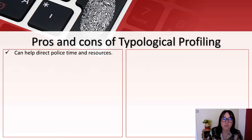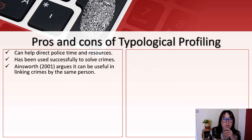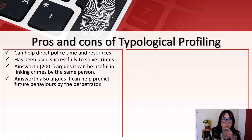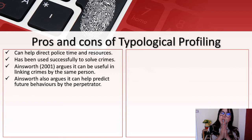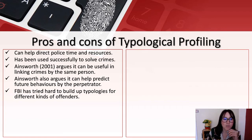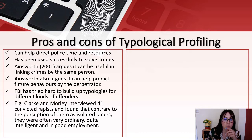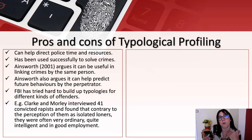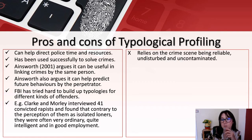The pros of typological profiling: it can help direct police time and resources, has been used successfully to solve crimes, and Ainsworth (2001) argues it can be useful in linking crimes to the same person and predicting future behaviours by the perpetrator. The FBI has tried to build up typologies for different offenders. Clark and Morley interviewed 41 convicted rapists and found, contrary to perception, they were often ordinary, quite intelligent, and good in employment. However, it does rely on the crime scene being reliable, undisturbed, and uncontaminated.